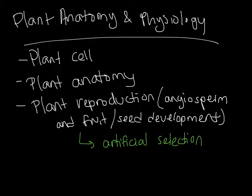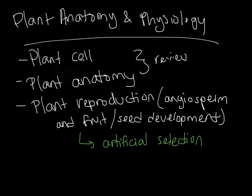The objectives for this lecture are a bit of a review from what you might have learned in class or from another biology course. We'll cover the structures of a plant cell, plant anatomy, the structures of the plant on a larger scale, and plant reproduction in terms of an angiosperm for fruit and seed development. We'll discuss that in the context of artificial selection — artificial meaning man-made, and selection meaning what traits get selected for.